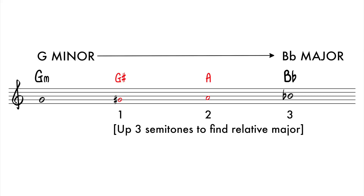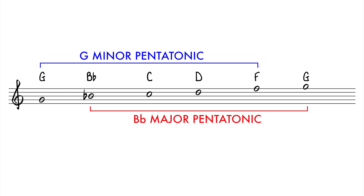Just remember a relative minor is always three semitones beneath its major relative. Let's try and clear it up with a very quick example. Let's say that you worked out the song that you're playing is in G minor — you would go up three semitones which is B flat, and you're going to use a B flat pentatonic. However, because it's in G minor, you start on a G.